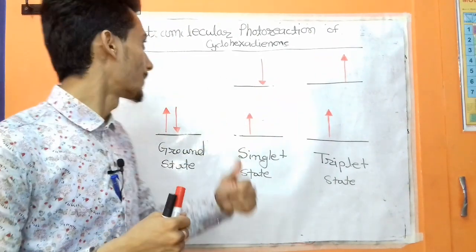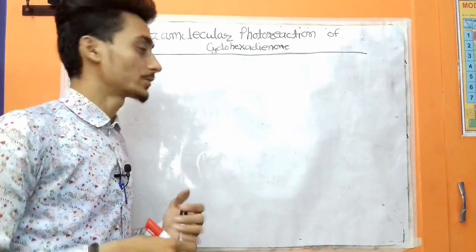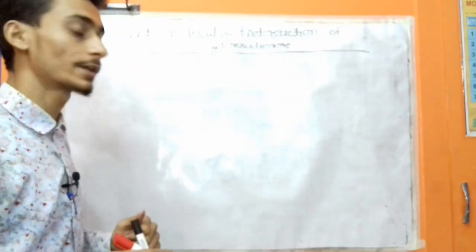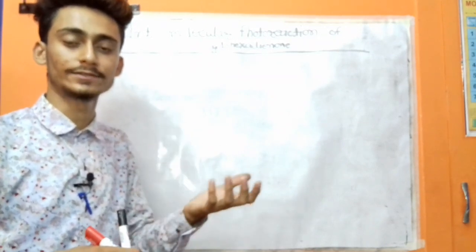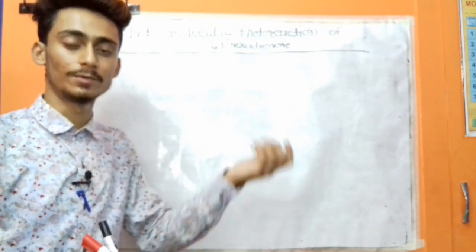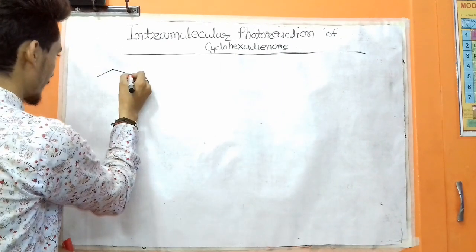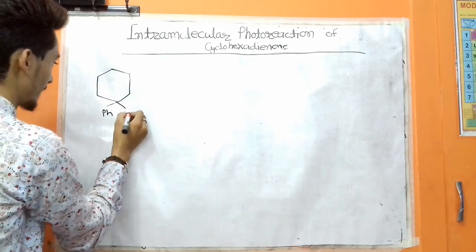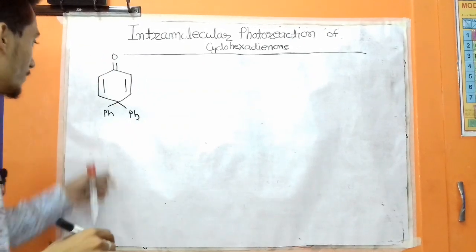Our topic is intramolecular photoreactions of cyclohexadienone. These reactions undergo a rearrangement process. To study these reactions, we take the example of 4,4-diaryl cyclohexadienone, and the reaction mechanism is given by 2,4,4-diaryl cyclohexadienone.